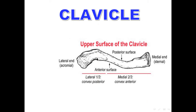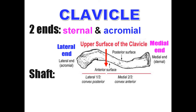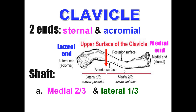Starting with the clavicle: the clavicle is a long bone formed of two ends and a shaft. The two ends are the medial end, called the sternal end because it articulates with the sternum, and the lateral end, called the acromial end because it articulates with the acromion. The shaft is divided into medial two-thirds and lateral one-third. The medial two-thirds are convex anteriorly; the lateral one-third is convex posteriorly.